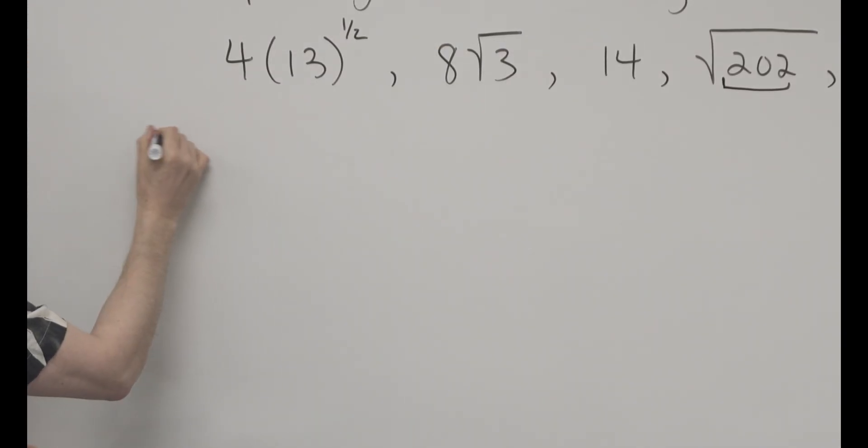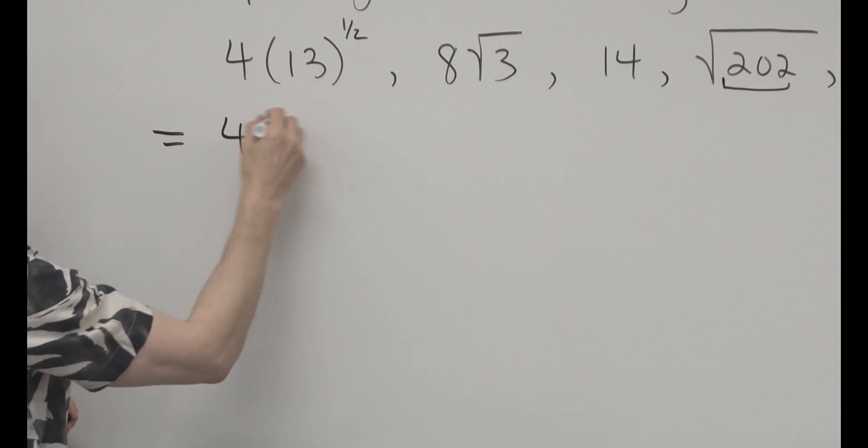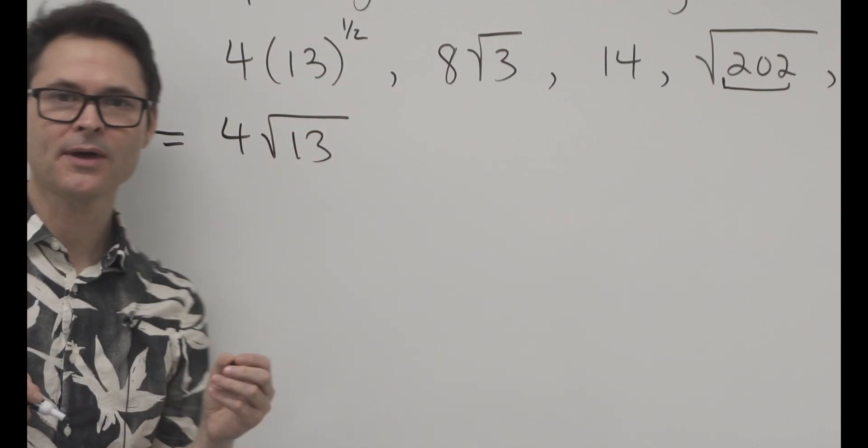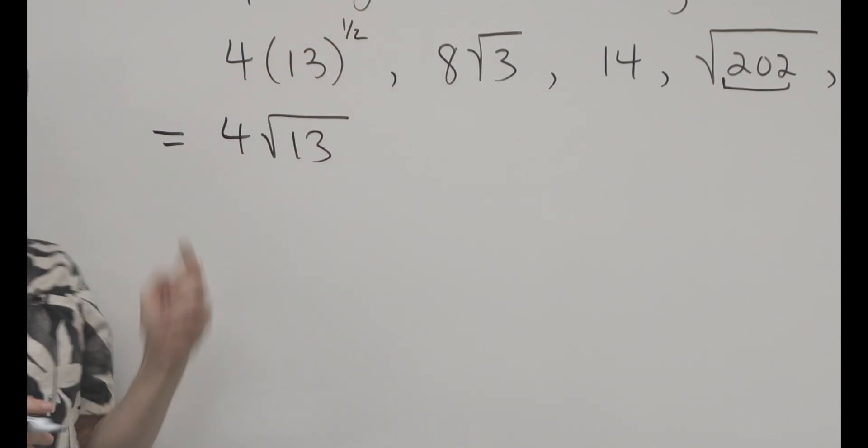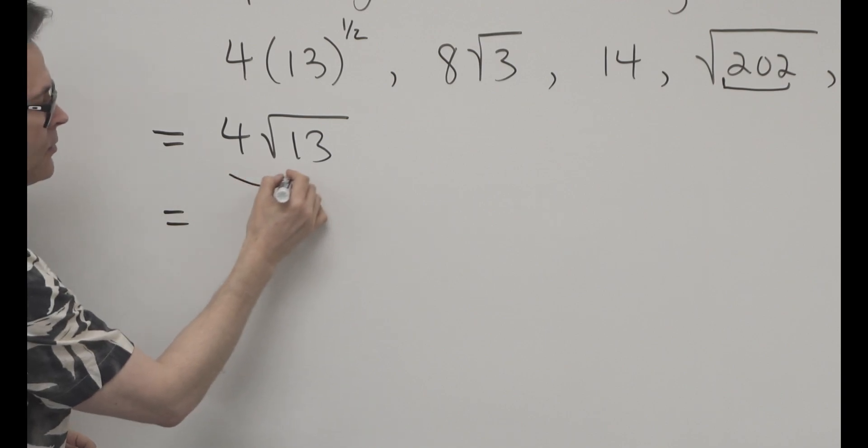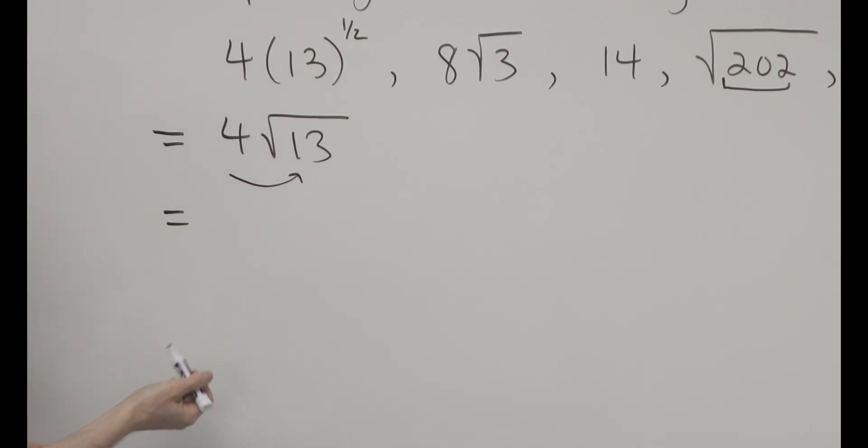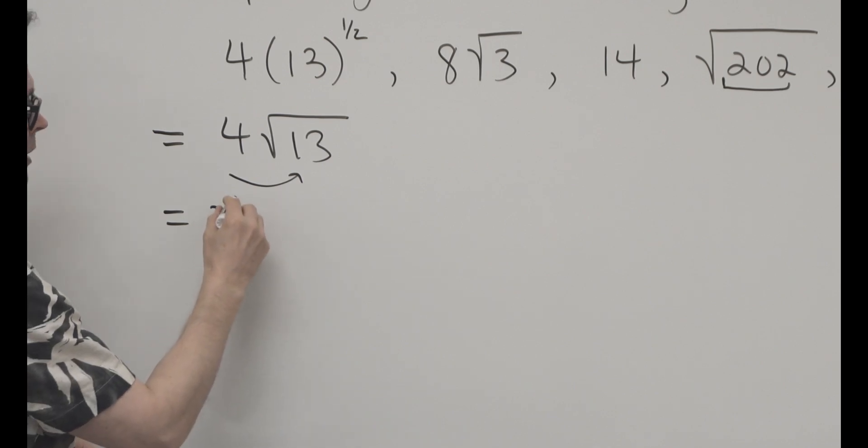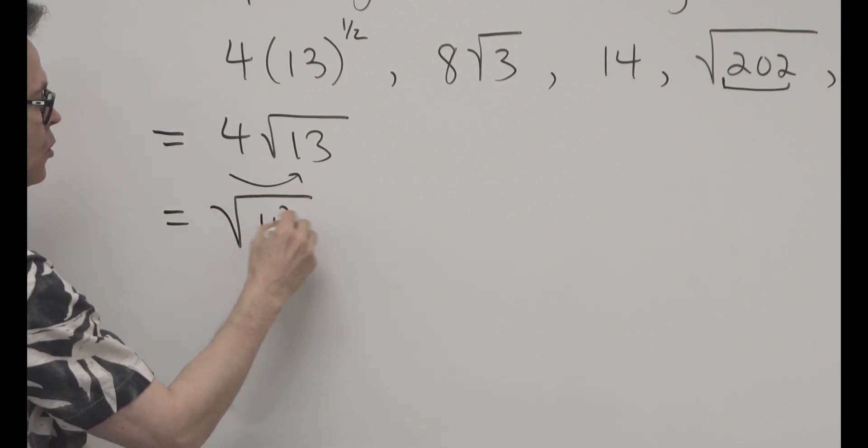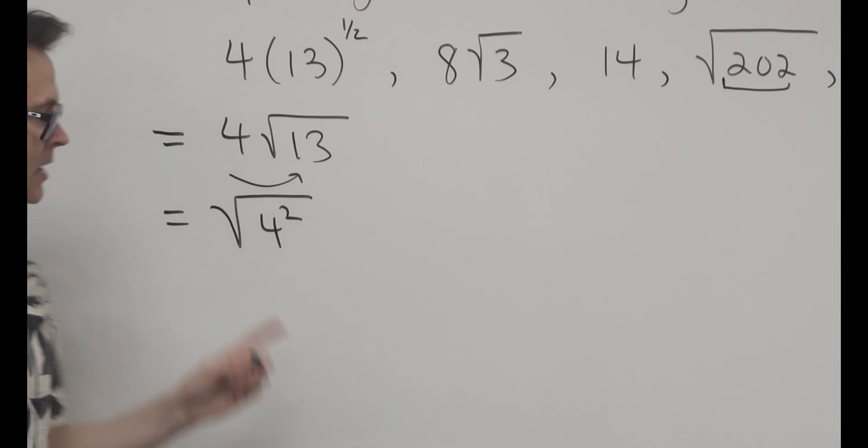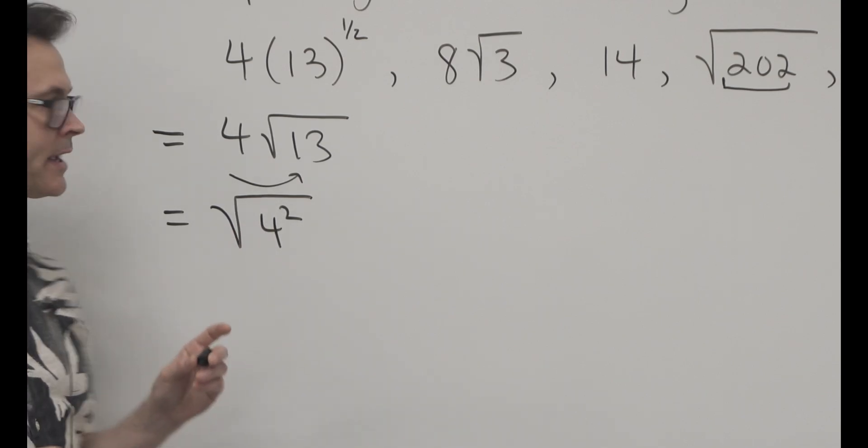Let's come to this one first. When I have a square root, when I have 1 half on the number, that's actually the square root of 13. An exponent of 1 over 2 is the square root. Then I can write this as an entire radical by taking the 4 and putting it inside the radical. I can write 4 as 4 squared, square rooted, because I know that if I square root 4 squared, I get 4.